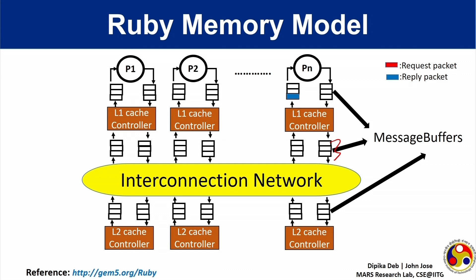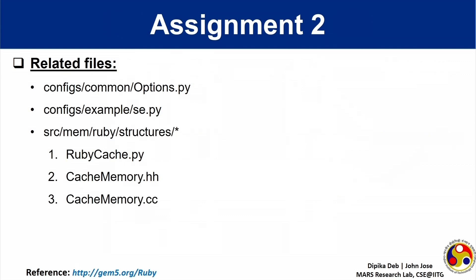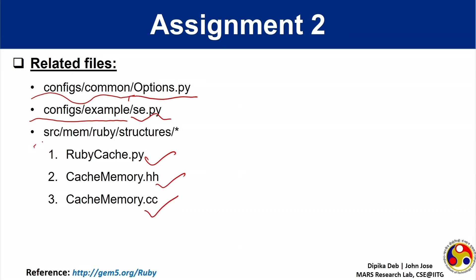In the previous video, I have already shown how to configure a unicore processor with different L1 cache and L2 cache configurations. The second assignment on GEM5 will contain such modifications which you can either enter through the command line or the options.py file. These are the related files for assignment 2. You can find options.py in this directory, and the simulation script can be found in this directory. You may also require these three files which can be found in the source mem ruby structures directory. These actually implement the caches in the Ruby module. These three files in association with the options.py file are of prime importance in solving assignment 2.